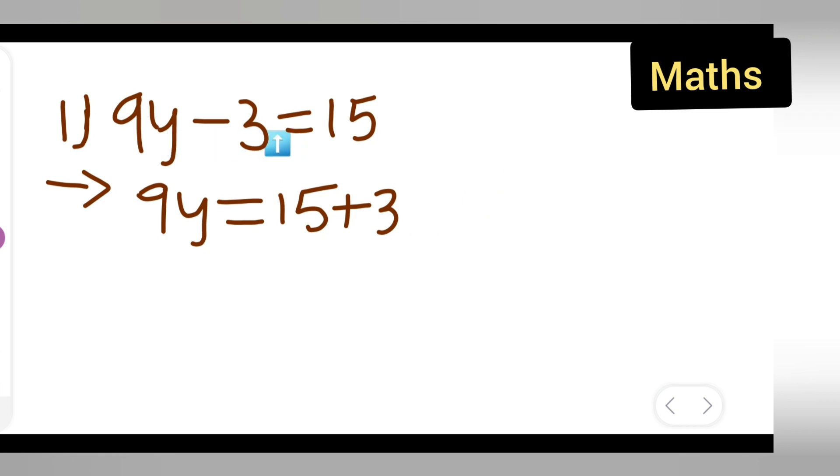So here it is negative. Since it is negative, it will become positive when it goes other side, right side. So now write down 9y is equal to, now I will have to add these numbers 15 plus 3. 5 plus 3 will be 8 and 1. So here your answer is 18.